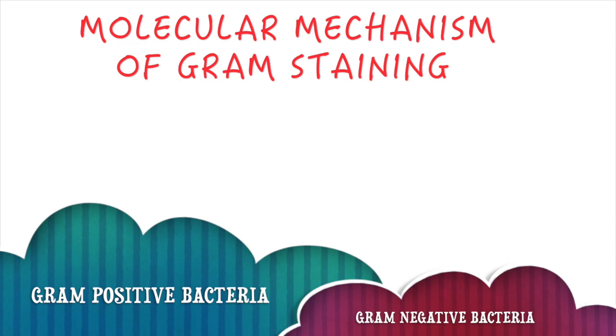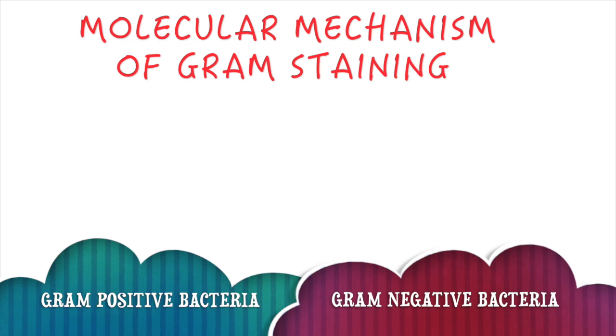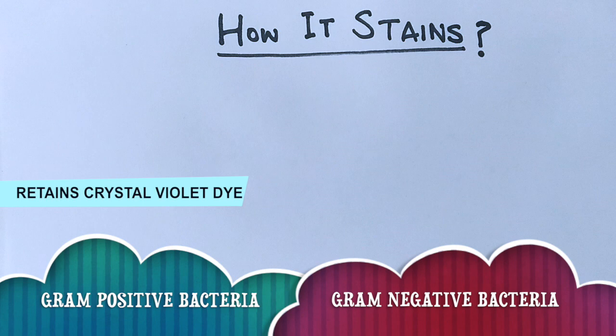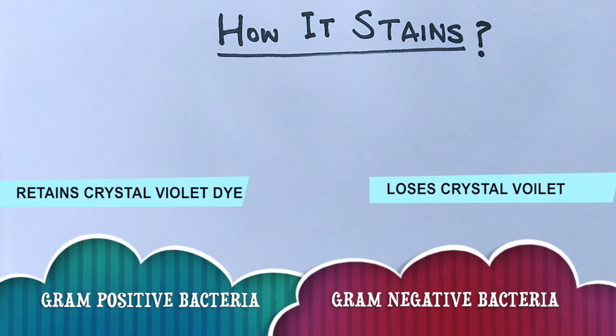In this video we'll be discussing the molecular mechanism of the Gram staining technique. This technique differentiates between two types of bacterial cells on the basis of their cell wall structure, which is displayed by their retention capability of the primary dye. A bacteria which retains crystal violet dye is Gram positive, while others which do not retain crystal violet dye and get counterstained by saffranin dye are Gram negative.